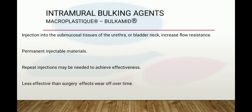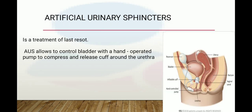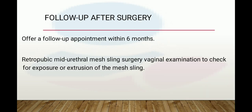Intramural bulking agents involve injection into the submucosal tissues of the urethra and bladder neck to increase flow resistance. Repeat injections may be needed to achieve effectiveness, and the effect wears off over time — they are less effective than surgery. The artificial urinary sphincter is the treatment of last resort, using a hand-operated pump to compress and release a cuff around the urethra. After surgery, offer a follow-up appointment within six months, with vaginal examination to check for mesh exposure or extrusion following mid-urethral mesh sling surgery.